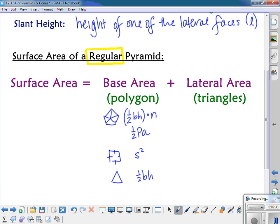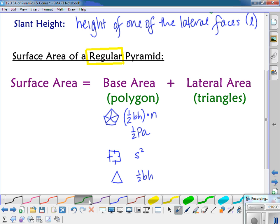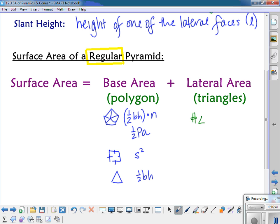And then for the triangles, you just take the number of triangles, however many there are, which is the number of sides of the base, times the area, which is one-half base times height. So really, you already know how to find surface area. It's just a matter of taking all the individual faces and adding them together.